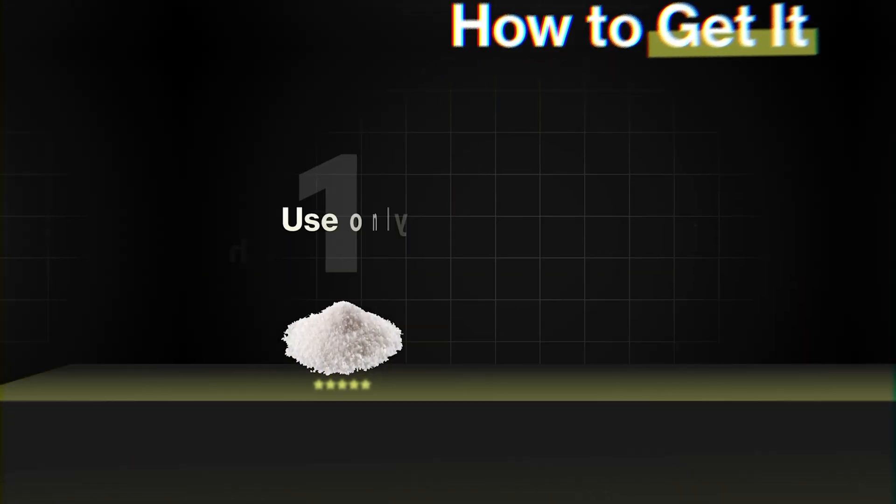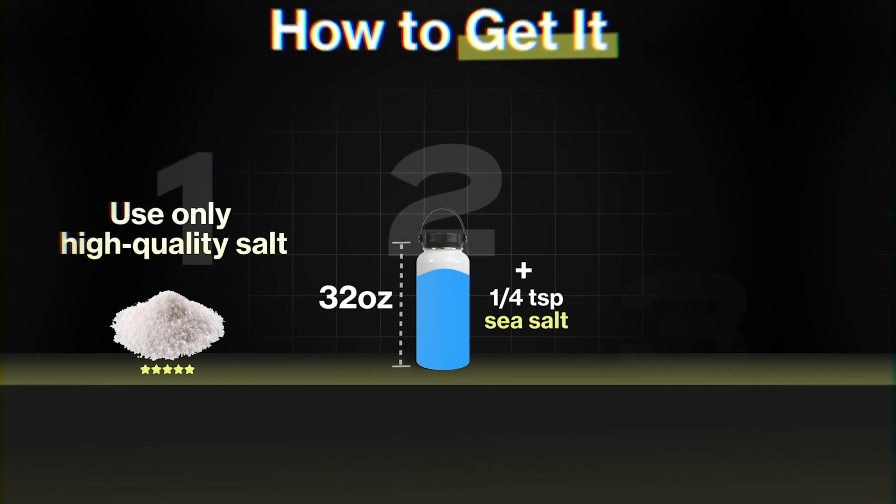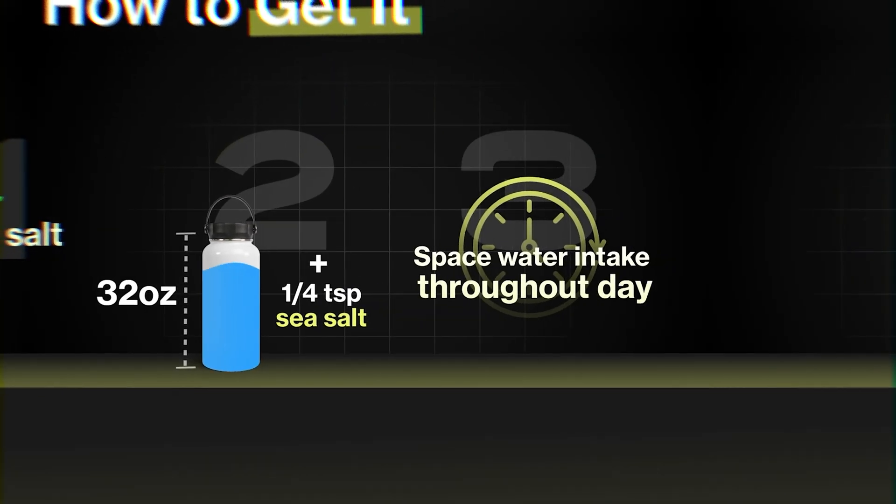How to get it? First and foremost, only use high quality salt. Add a fourth of a teaspoon of sea salt per 32 ounces of water, and just make sure to space your water intake throughout the day.